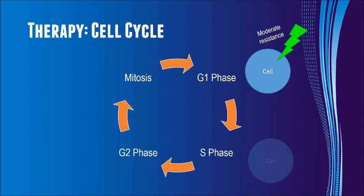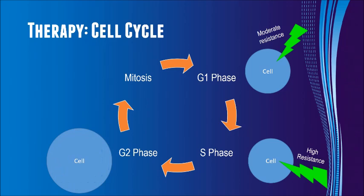In the S phase, DNA replication begins in anticipation of creating new cells, and it has a high resistance to radiation. In the G2 phase, the cells continue to grow, and again are fairly radio-resistant. The cells, however, are most sensitive to radiation damage when they are dividing through the stage called mitosis.